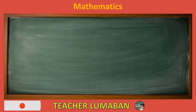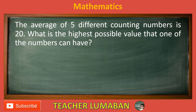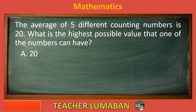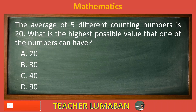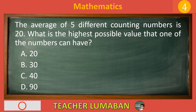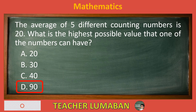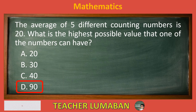The average of 5 different counting numbers is 20. What is the highest possible value that one of the numbers can have? Letter A: 20. Letter B: 30. Letter C: 40. Letter D: 90. The correct answer is letter D, 90. The highest possible value that one of the numbers can have is 90.